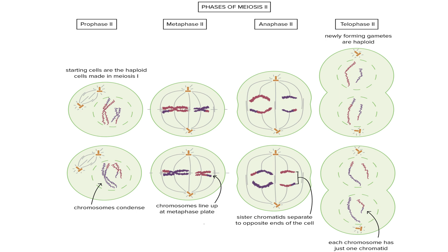Then telophase two, cytokinesis is going to divide the cells in half, giving us four cells with genetically unique haploid cells, concluding meiosis.